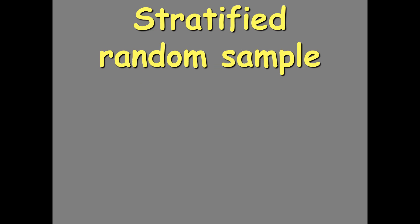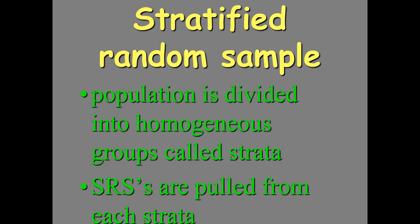The first method I want to talk about is the stratified random sample. Essentially, instead of just doing an SRS of all the individuals, you're going to take the individuals and put them in groups, or strata. All the individuals in a given strata are going to have one characteristic or trait in common.